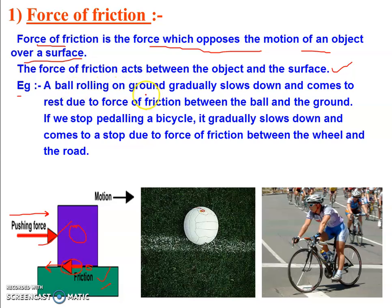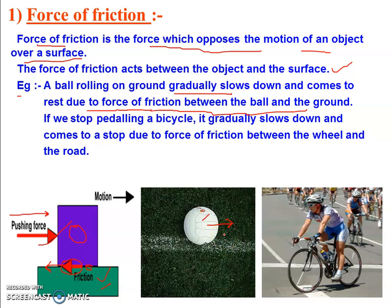For example, a ball rolling on the ground gradually slows down and comes to rest due to the force of friction between the ball and the ground. The ball is moving in one direction and its speed decreases with time until it gets stopped. This means some opposing force is acting on it.